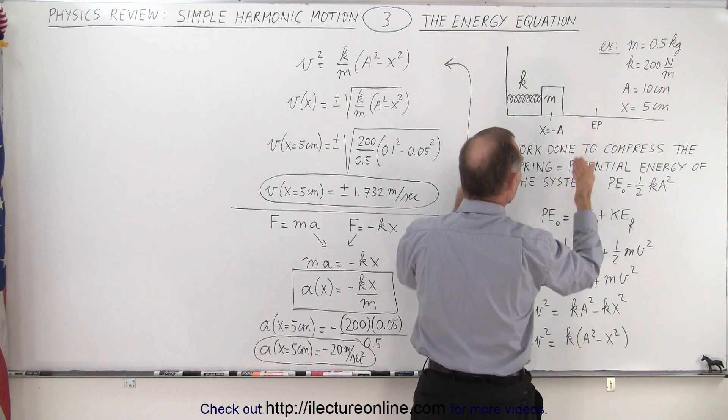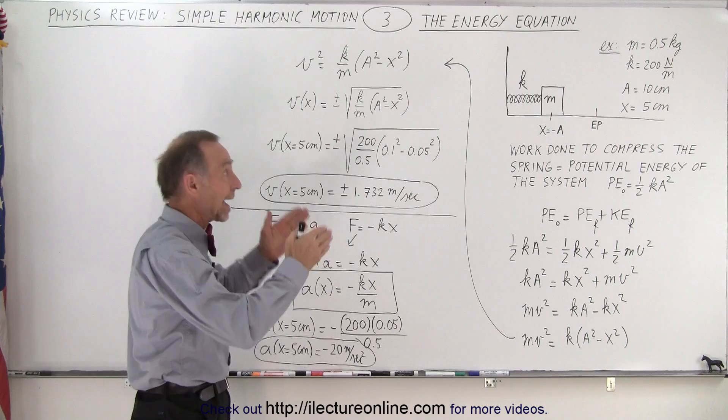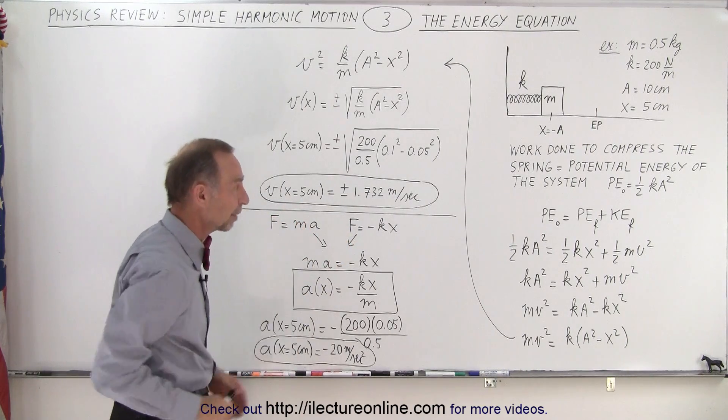When we do the work to compress a spring, we initially put potential energy into the system, which is equal to one-half ka squared, a being the maximum distance a spring is being compressed.